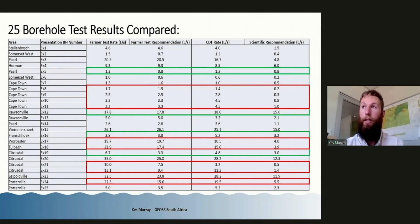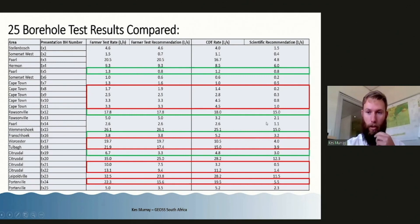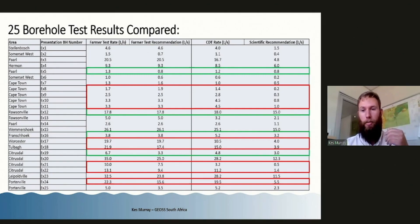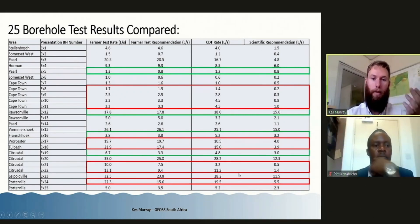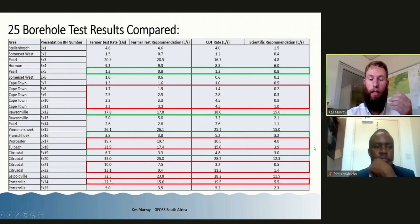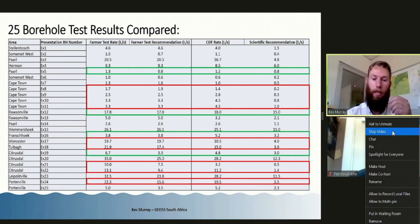There are a couple of cases where the discrepancies are really quite shocking. Looking at some of the bottom examples, we're talking about a recommendation of 7.5 liters per second compared to half a liter per second, and a recommendation of 15.5 liters per second compared to 5.5 liters per second. It gets a little bit shocking to see this when we start comparing the results in this manner.